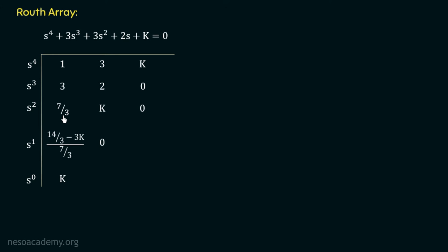For the s² row, the first element is (3×3 − 1×2)/3 = 7/3, and the second element is (3×k − 1×0)/3 = k, with the third element equal to 0. For the s¹ row, the first element is (7/3×2 − 3×k) / (7/3), giving 14/3 − 3k all over 7/3, and the second element is 0. The s⁰ row has coefficient k.